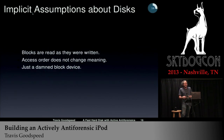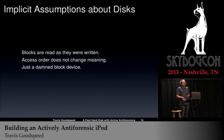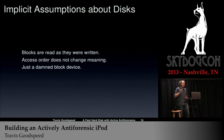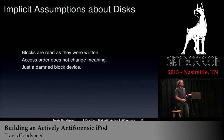You also have these implicit assumptions about how disks work. You assume that blocks are read back the same way they're written — this is true for every legitimate hard disk, but it doesn't need to be true. You can violate this assumption. It's also assumed that access order does not change the meaning. So if you read file A and then file B, you expect the same files as if you read file B first. That does not need to be true. It's generally assumed these are just block devices that won't do anything tricky underneath the hood, but there's nothing to stop you from adding it.